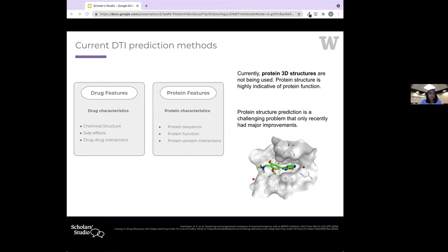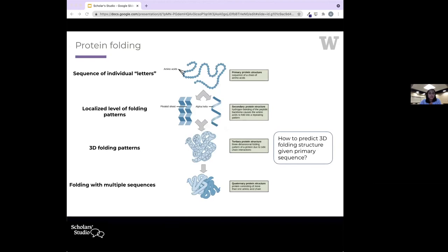Current drug target interaction prediction methods include different features from the drug side and the protein side: chemical features and side effects from the drug side, or protein characteristics including protein function or protein-protein interactions. But as I mentioned, protein 3D structure is really important for understanding the surfaces of proteins as well as their function. Currently, that's not being used in prediction methods, specifically because this is a really challenging problem, and only in the last two years has there been improvements in predicting protein structure.